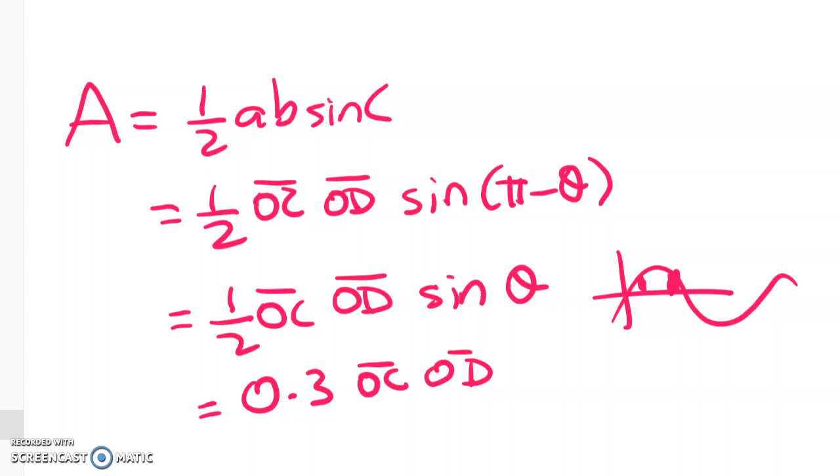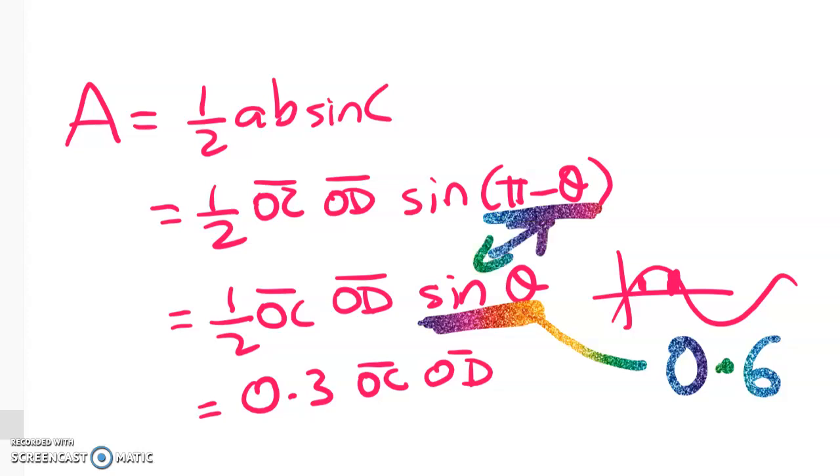Where we got to is that we are trying to find the area of the triangle, and we got down to here. So the very useful thing from part B is that we were given a value for sine theta, which was 0.6. Right now, we don't want sine theta. We wanted sine of pi on theta, but these two things are the same. And I think even spotting that is pretty cool. So once we've got to there, we've got an expression for the area of the triangle.